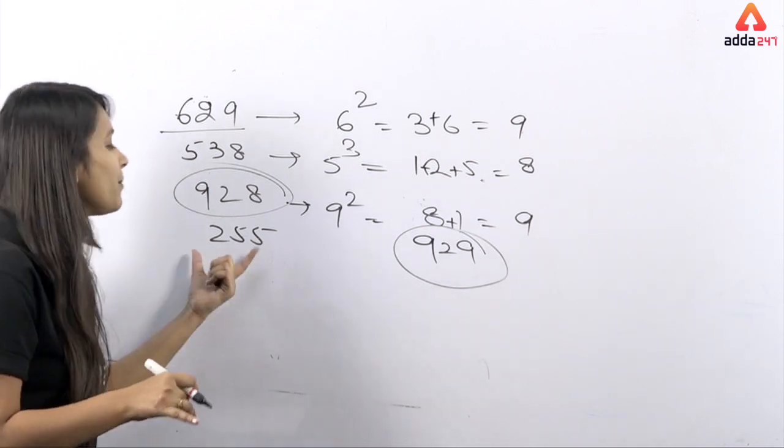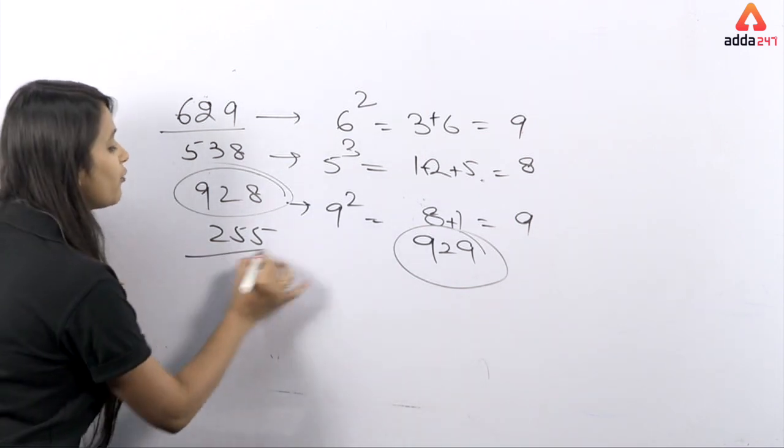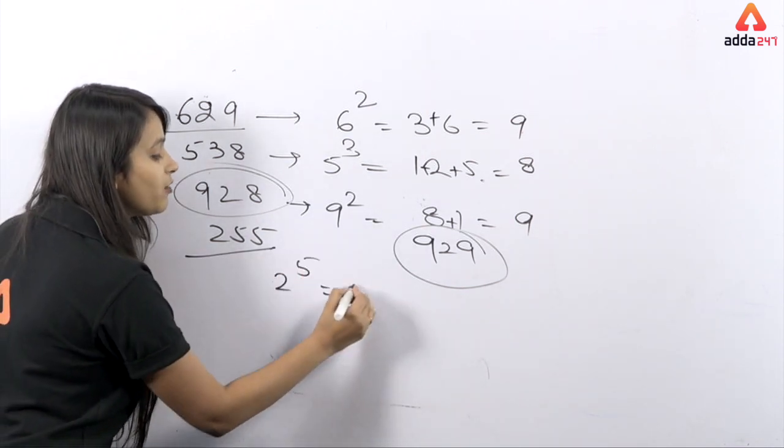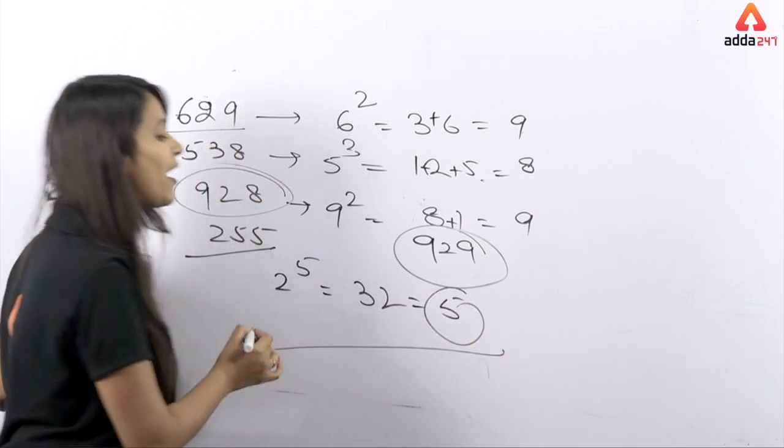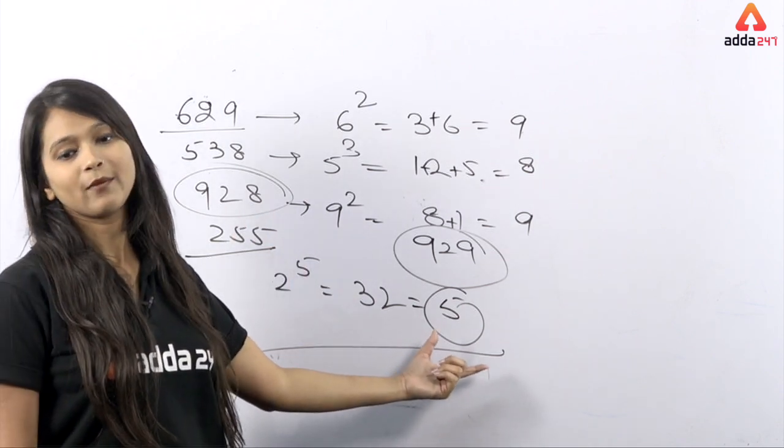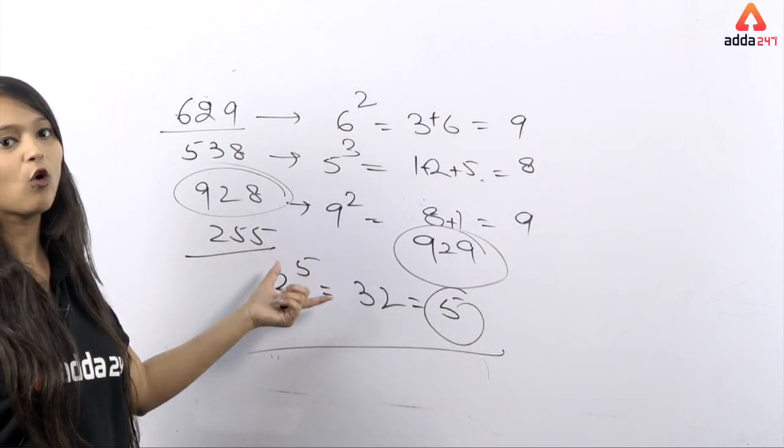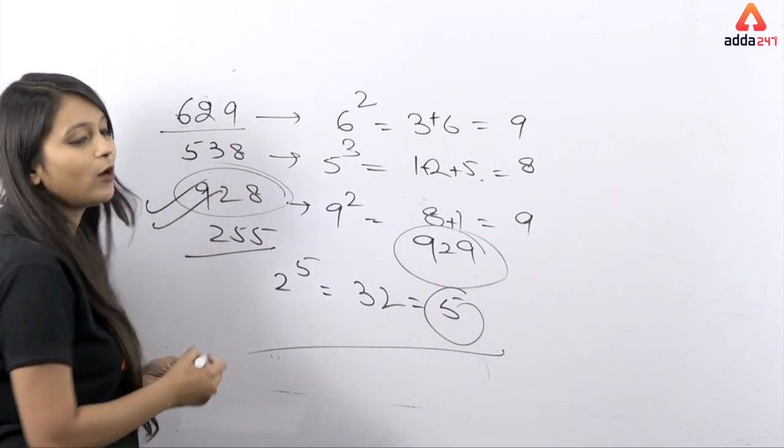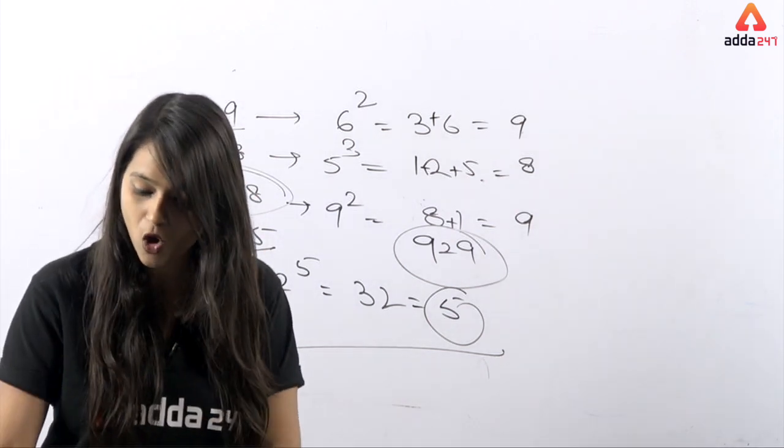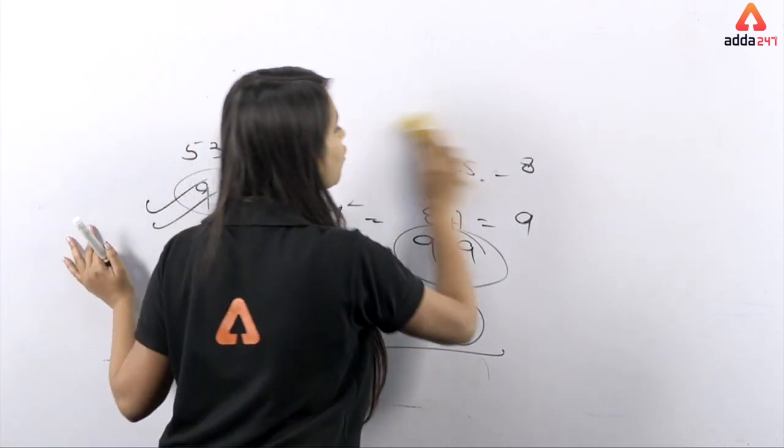If I talk about the last one, 255, what is it? 2 to the power 5, so how much does it become? 32. 3 plus 2 equals 5. The answer is 5. So 255 is completely right, and according to this, our answer 928 is completely different. 928 is the odd one out.